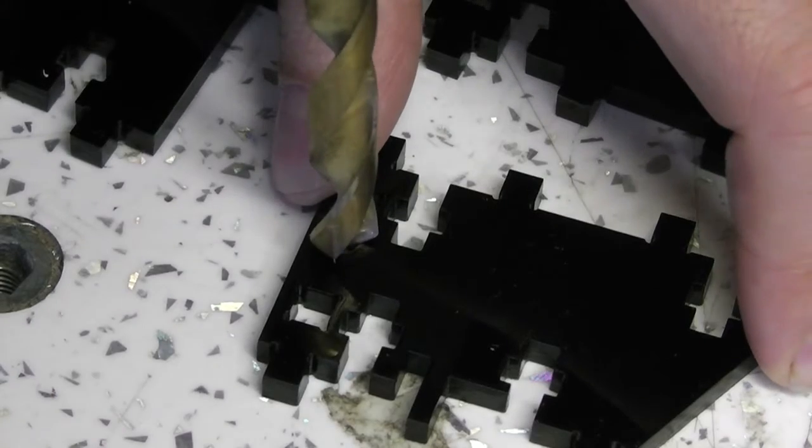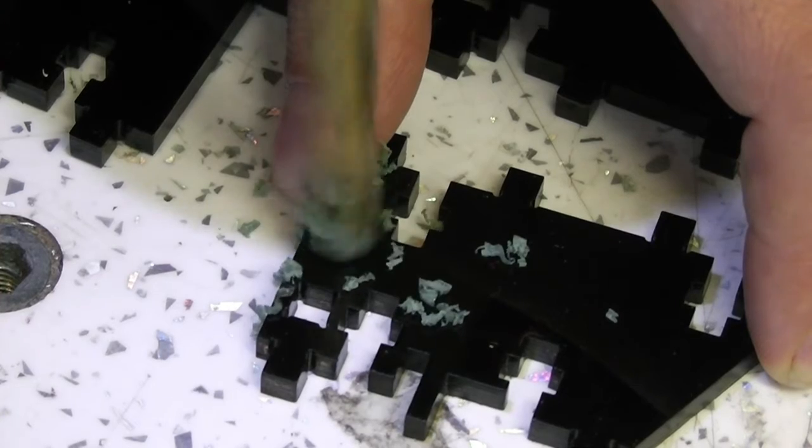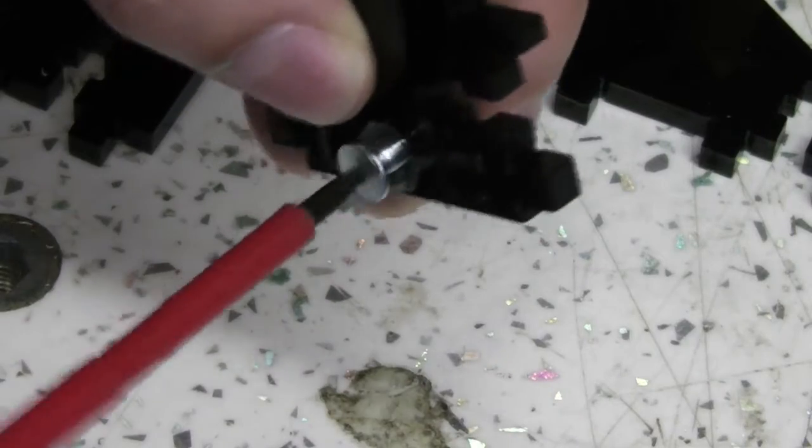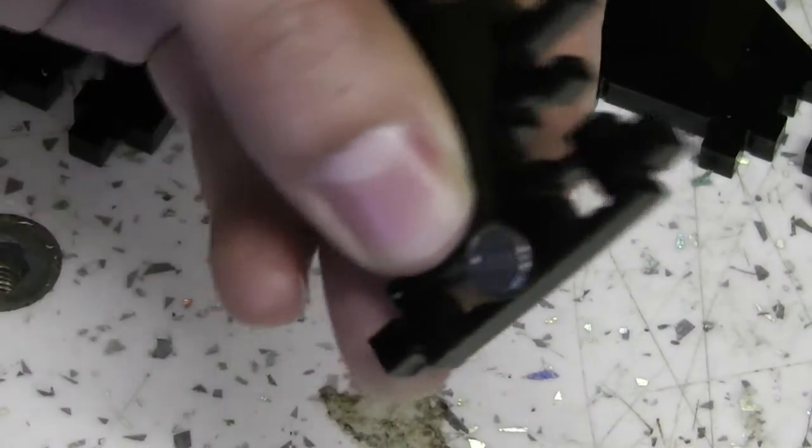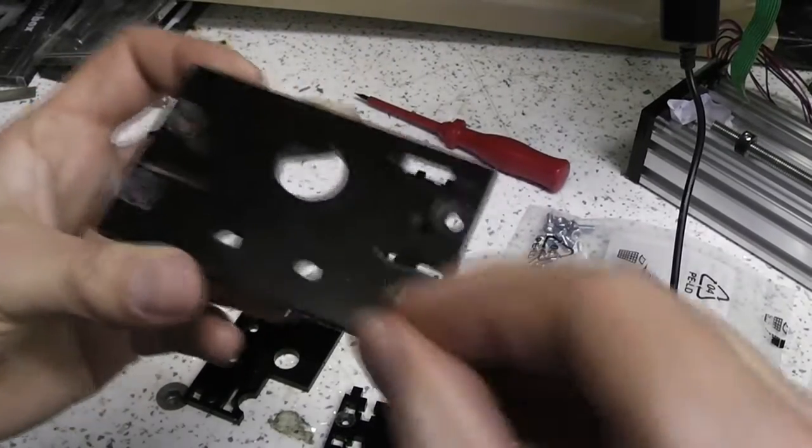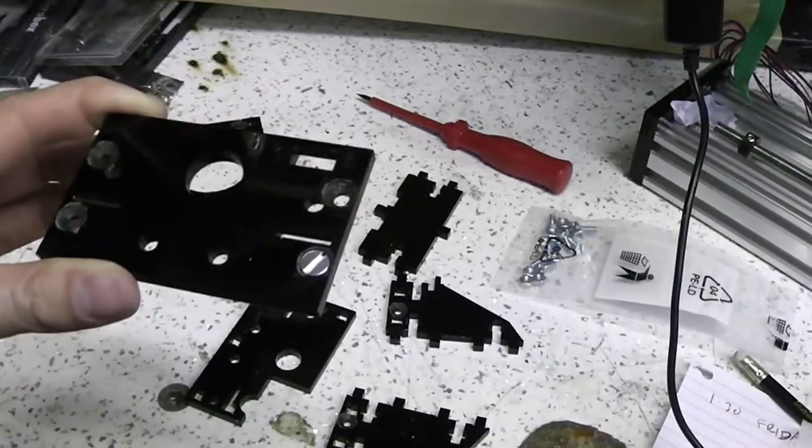I'll have to countersink all of the four millimetre holes on the outside surface of the piece to stop the bolt heads protruding. Especially on the part of the piece which is going to directly contact the aluminium extrusion. Otherwise it won't fit together properly. That's the piece there. It's important to make sure that the bolt heads are totally flush or beneath the surface of that acrylic piece.